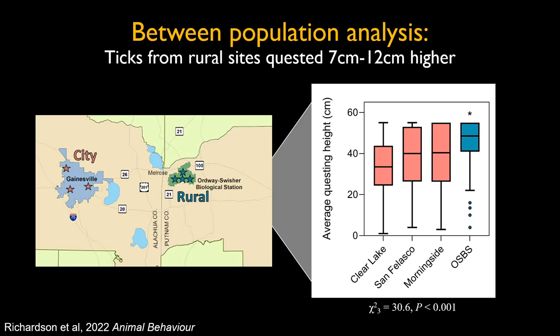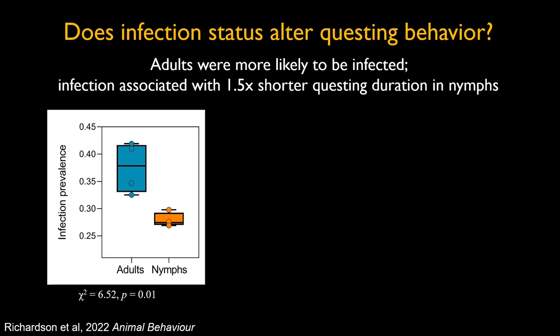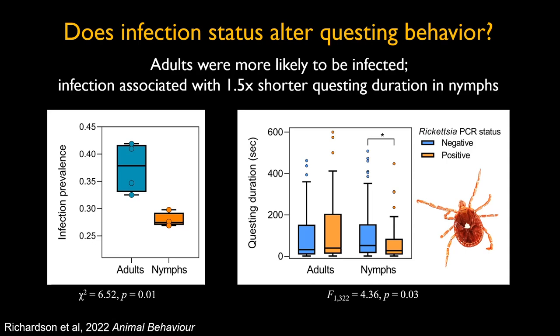Finally, she examined how carrying the bacterial pathogen Rickettsia amblyomatis affects questing behavior. Adult ticks were more likely to be infected than nymphs, as they've bitten more hosts. For adults, infection made no difference in behavior. But infected nymphs quested for shorter durations — about one and a half times shorter than uninfected juveniles. We don't know if they feel ill and change behavior, or if the bacteria is manipulating them.